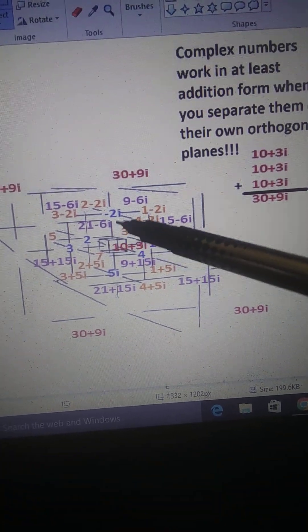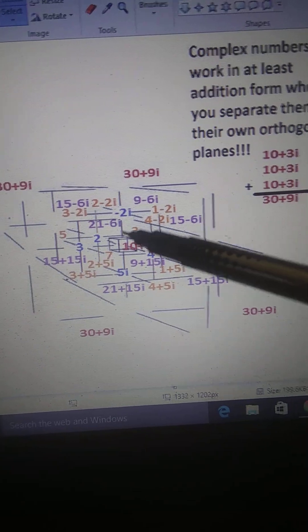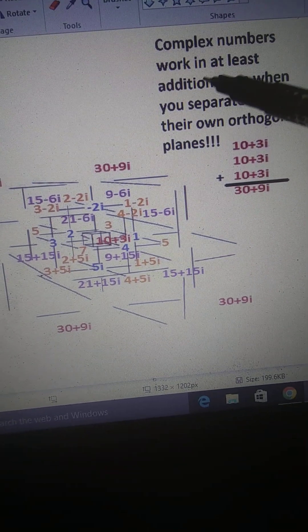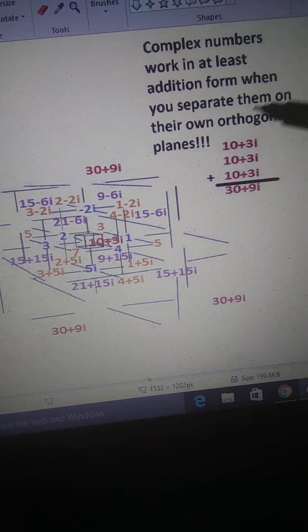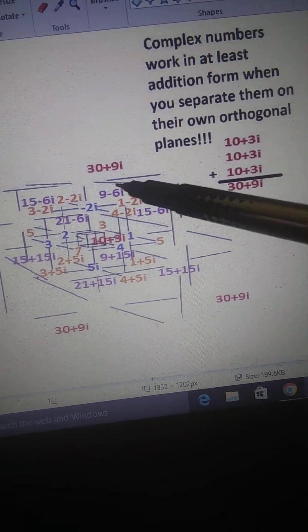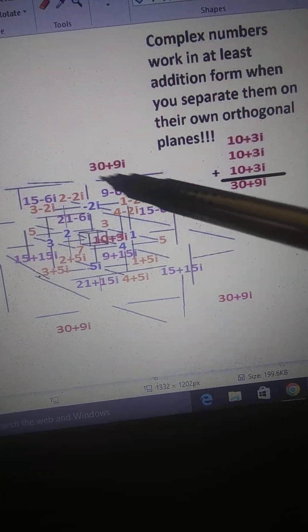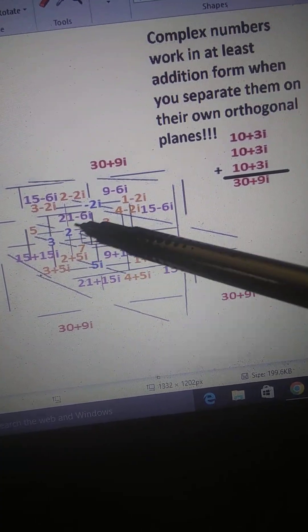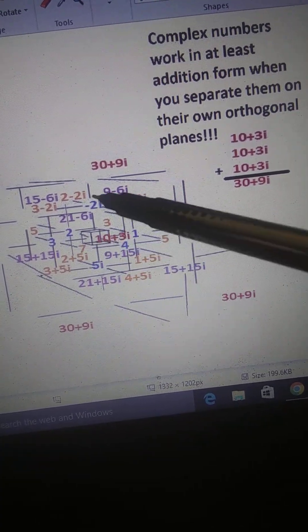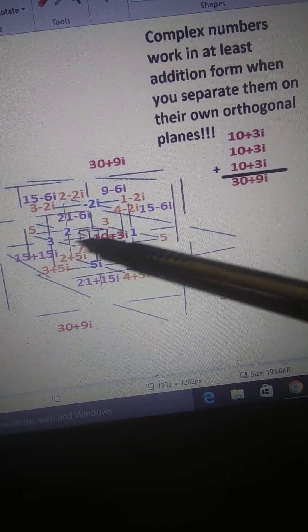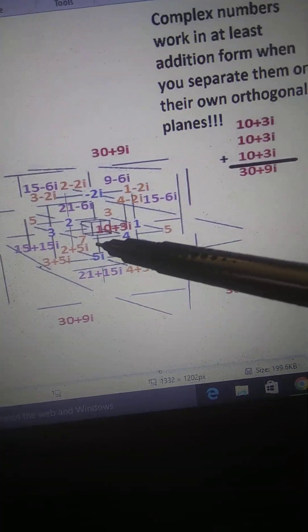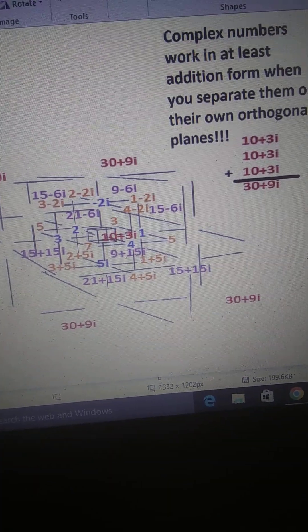I discovered that complex numbers work in at least addition form when you separate the two components, the imaginary and the real, on their own horizontal and vertical axis, the imaginary axis and the real axis. Thanks a lot, bye bye.